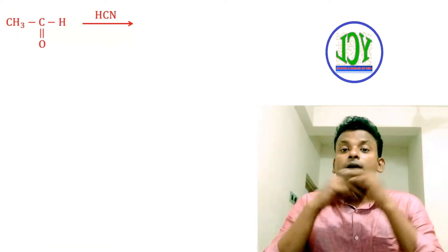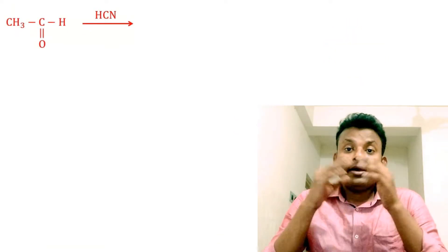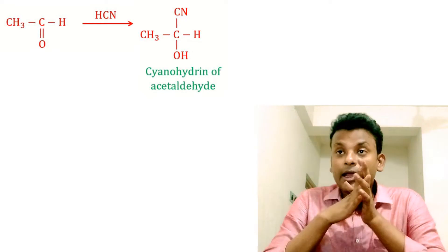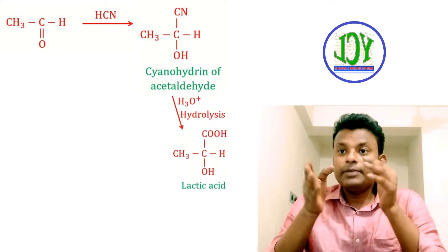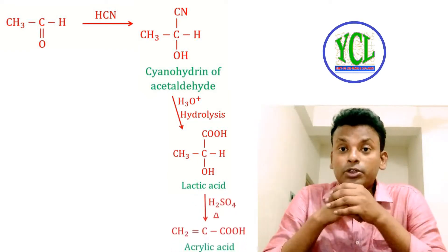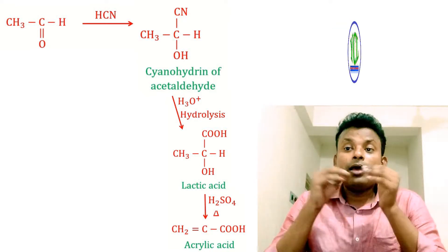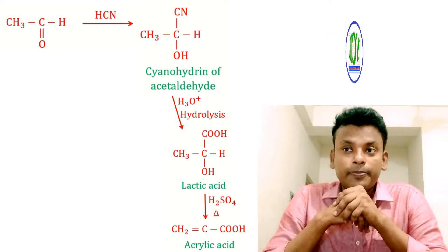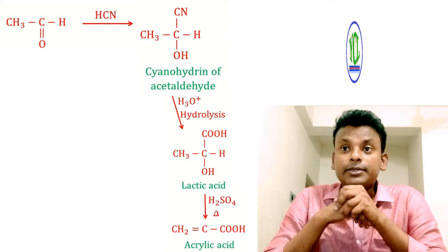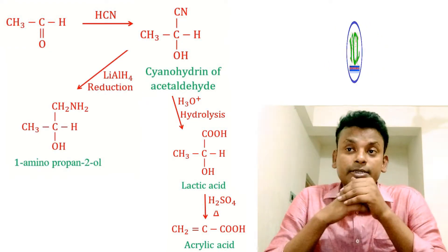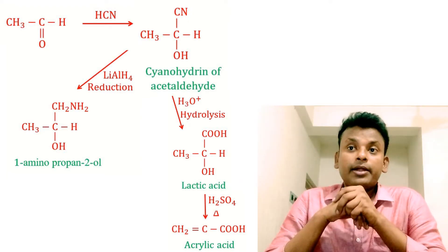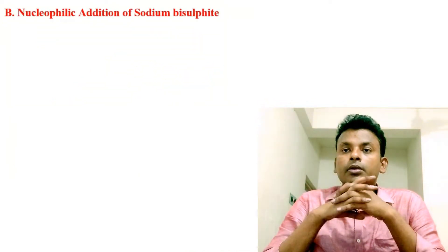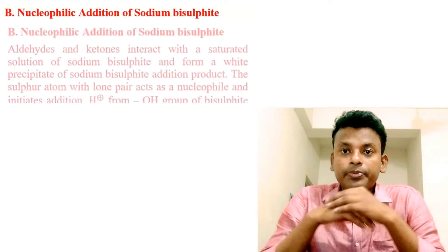Some conversions from cyanohydrins: acetaldehyde reacts with hydrogen cyanide to form the cyanohydrin of acetaldehyde. The CN group upon hydrolysis gives lactic acid, and on heating with concentrated dehydrating agent gives acrylic acid (formed by loss of water). From acrylic acid further transformations are possible. Also, the CN group upon reduction with lithium aluminium hydride (LiAlH₄) forms 1-aminopropan-2-ol.